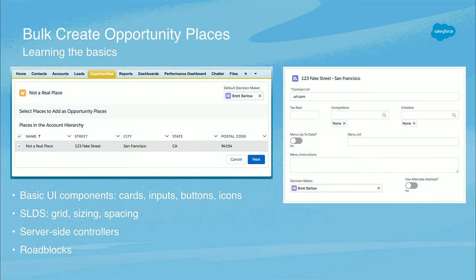I pulled out number five and built a Lightning component — called it Bulk Create Opportunity Places. The big benefit was that it helped me learn the basics. It's got a couple of screens and a few components. You're using a lot of the standard base components: the buttons, the inputs, the icons, the data tables. This gave users a brilliant experience — they loved it. They would click a button, select the places, go next, fill out the fields, and it would make everything for them. I look back at this now and think I can do a lot better, and I'll talk about that later.